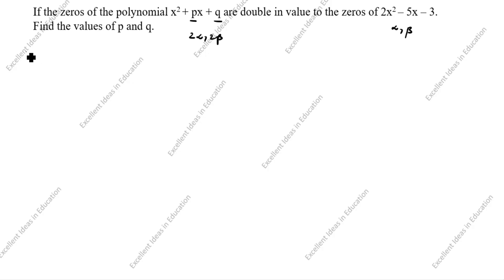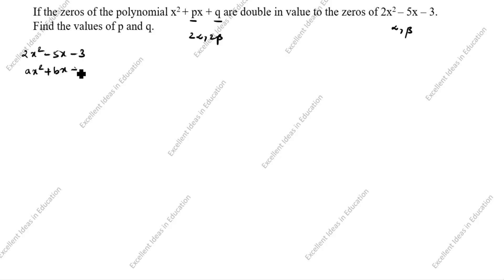Next we will solve 2x squared minus 5x minus 3. Using the standard quadratic polynomial equation x squared plus bx plus c, we identify: a is equal to 2, b is equal to minus 5, c is equal to minus 3.